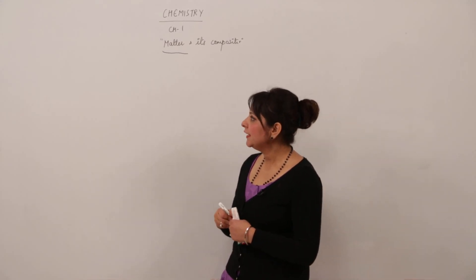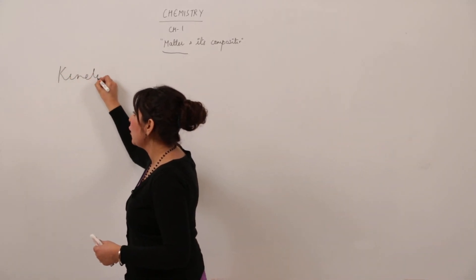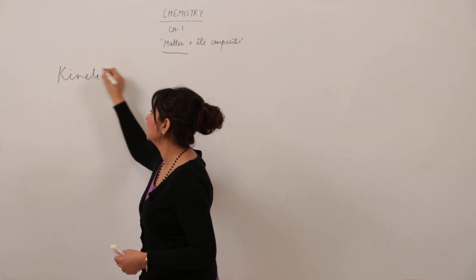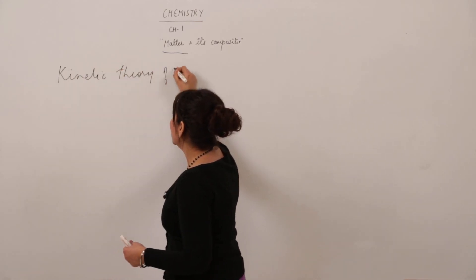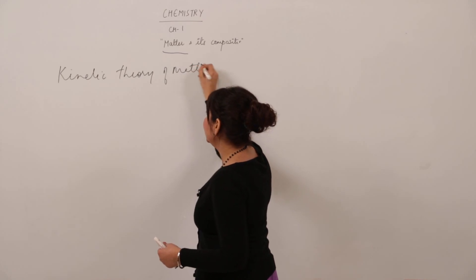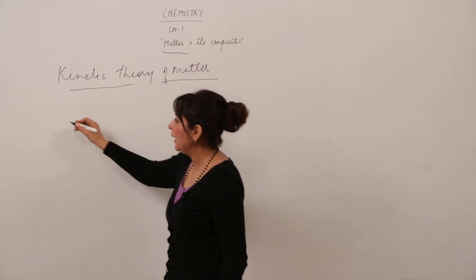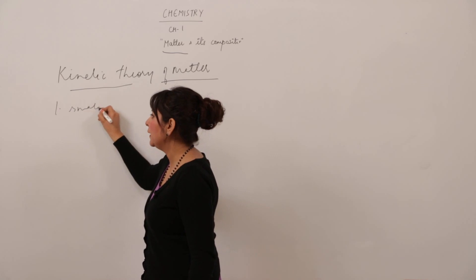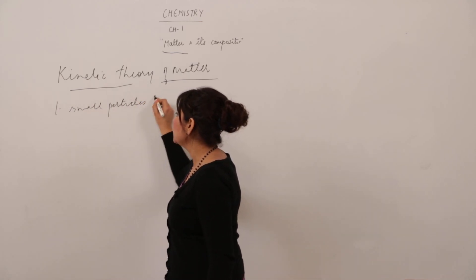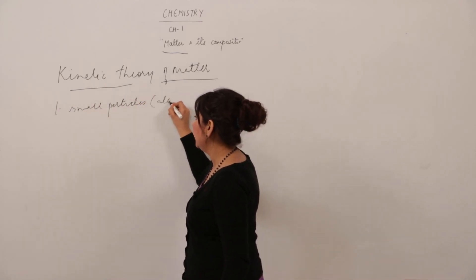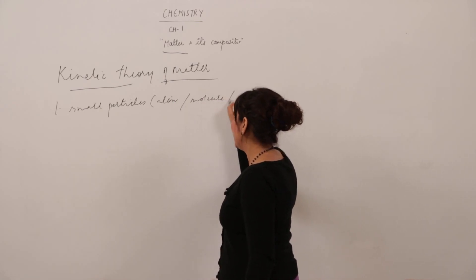Now we are taking into account the kinetic theory of matter. According to the postulates of kinetic theory of matter, it states that matter is made up of small particles. Those particles can be atoms, molecules, and ions.